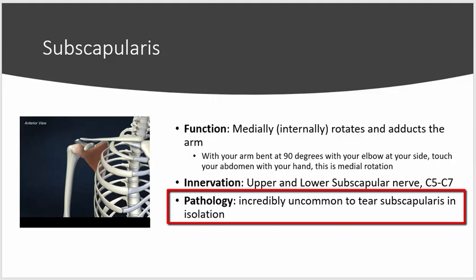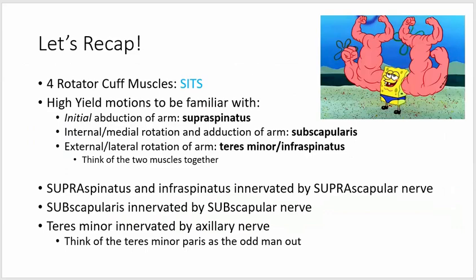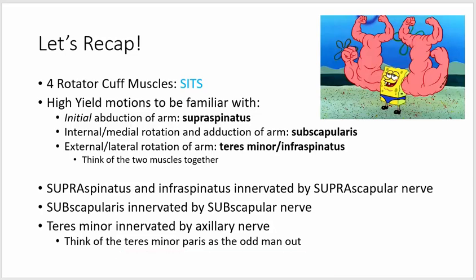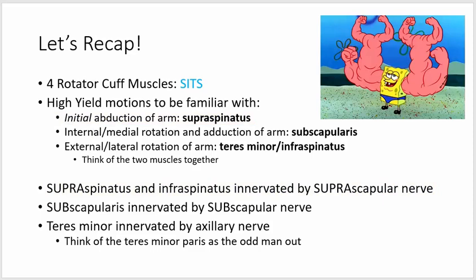Let's recap the high-yield info. The four rotator cuff muscles — SITS: supraspinatus, infraspinatus, teres minor, and subscapularis. For the supraspinatus, remember its function in initiating abduction and innervation via the suprascapular nerve; patients can have pain with resisted abduction and a positive empty can test. Think of the infraspinatus and teres minor together — teres minor is innervated by the axillary nerve, while both the supraspinatus and infraspinatus are innervated by the suprascapular nerve.